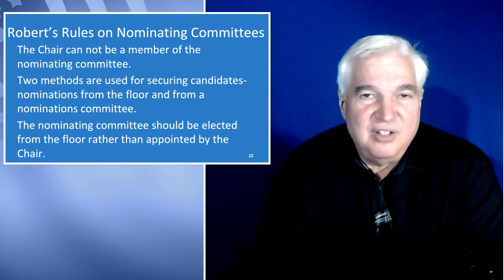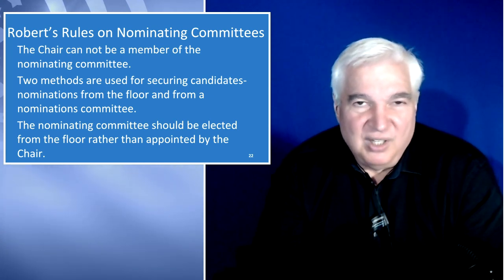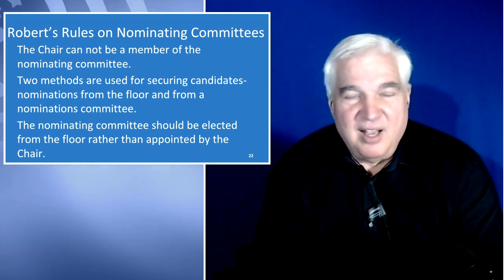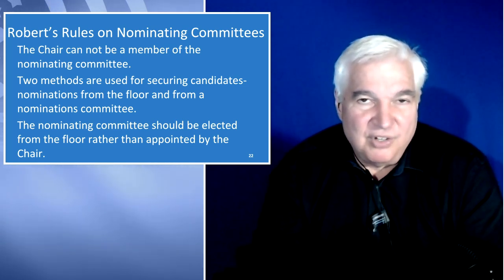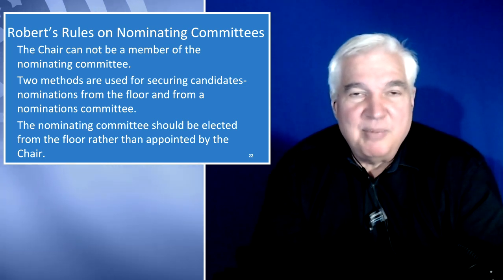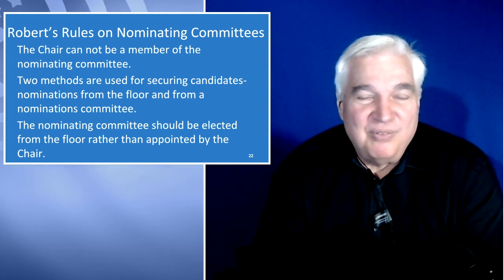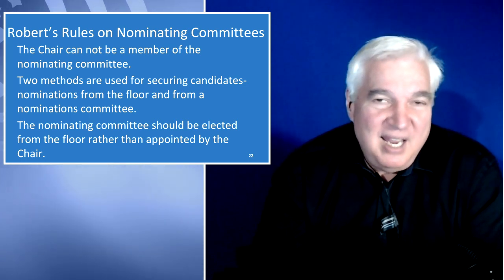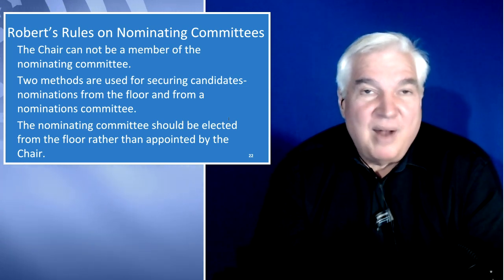There are two methods that make a lot of sense for county parties: nominations from the floor and nominations from a nominations committee. As seen in the Clatsop County bylaws, both are allowed. At the coming September meeting we will form the committee, and if someone wants to run for chair or delegate, they can inform the committee of their interest. Usually we end up at the October meeting with no one having volunteered for anything, and we start asking for nominations from the floor. The nominating committee should be elected from the floor rather than appointed by the chair.